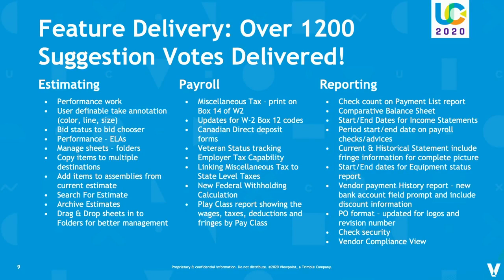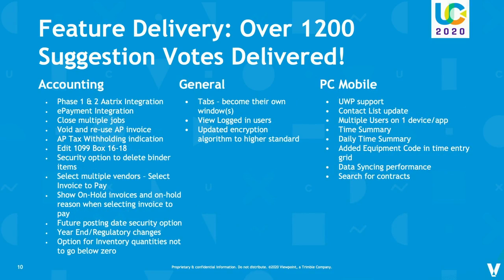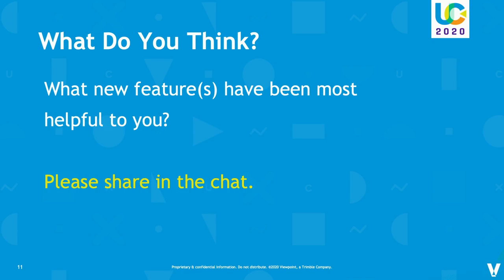This is a snapshot of the features we have delivered over the last two years or so. When you add them all up, it's well over 1,200 suggestion box votes across all of these features. We have done a significant amount of work across all components of the Pro Contractor product suite — accounting, project management, PC mobile, and estimating. We're going to keep doing that.